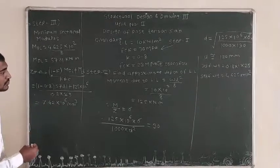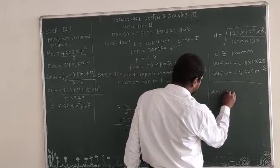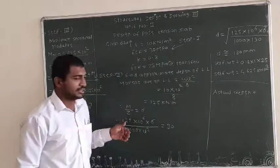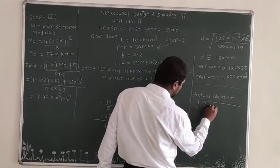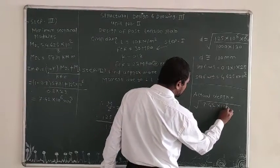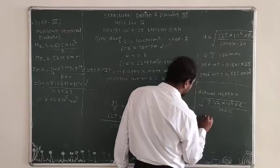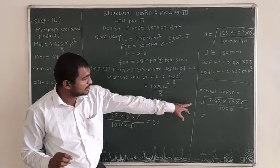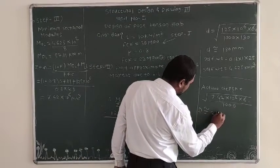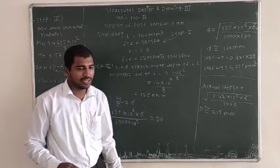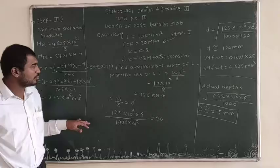The actual depth is then found from Z_min = 7.42 × 10⁶. Using the relation Z = 1000 × D² / 6, we solve for D: D = √(7.42 × 10⁶ × 6 / 1000). The static depth D is approximately 250 mm. This concludes the problem. I will explain this problem again.